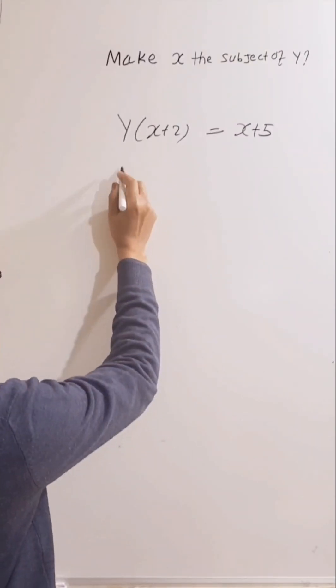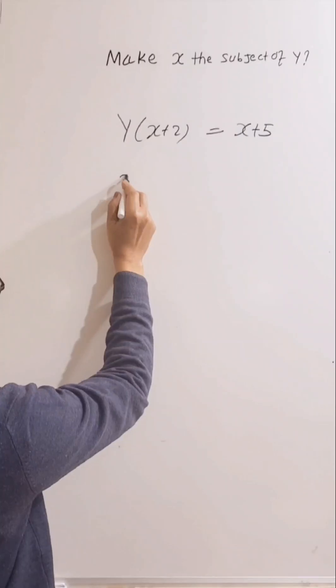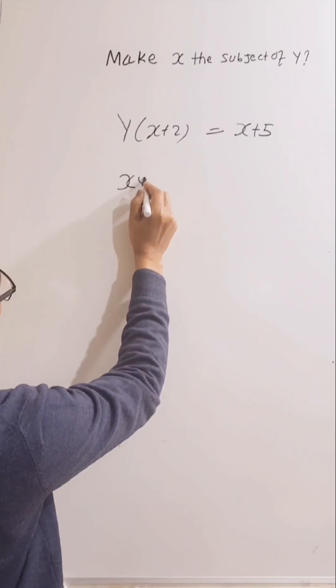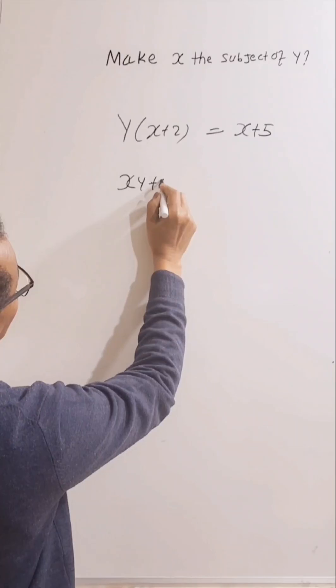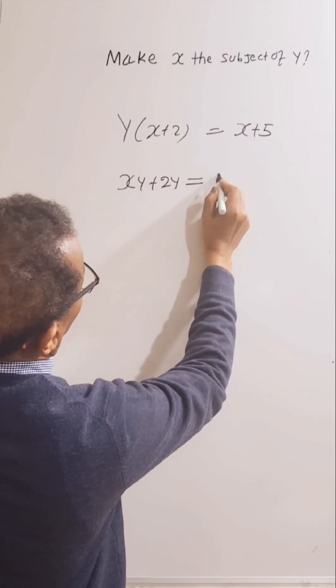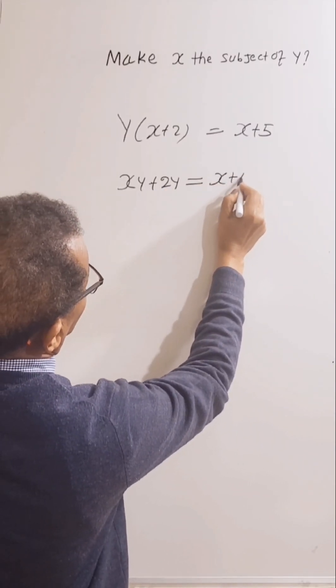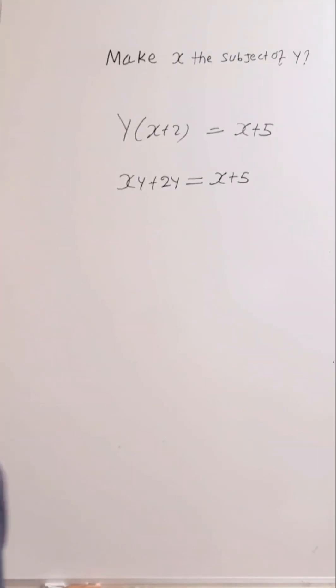So let's multiply the bracket then. Y times x, x, y, plus y times this, 2y, equal x plus 5.